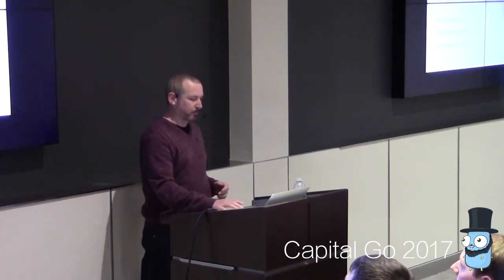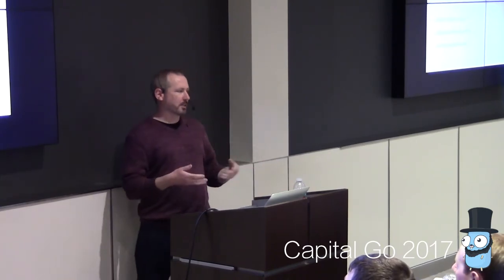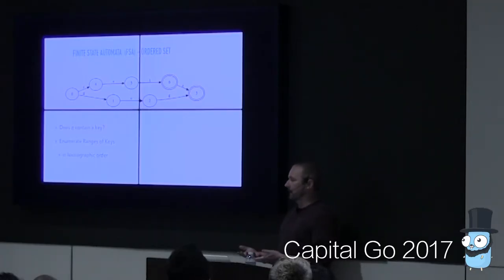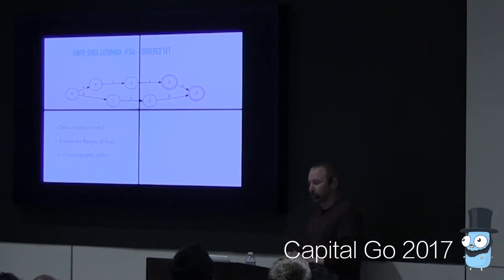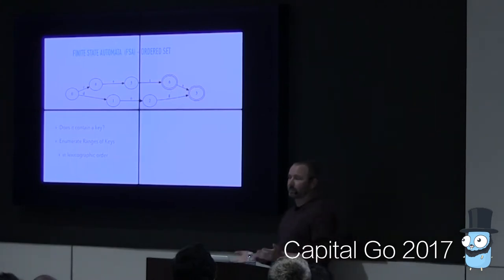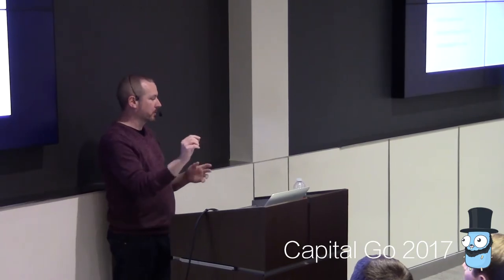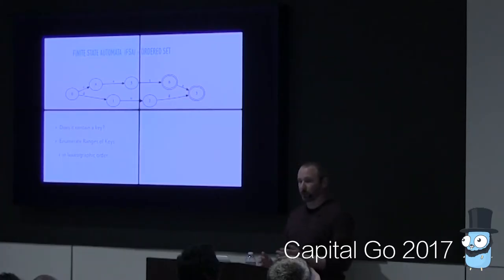We also naturally think about regular expressions as matching a particular set of strings — sometimes an infinite set. That notion that a finite state automaton represents a set is what we're going to build on. We can look at FSAs as implementing an ordered set. We can answer: does it contain a particular key? And we can also enumerate ranges of keys by following the graph traversals in a particular order.